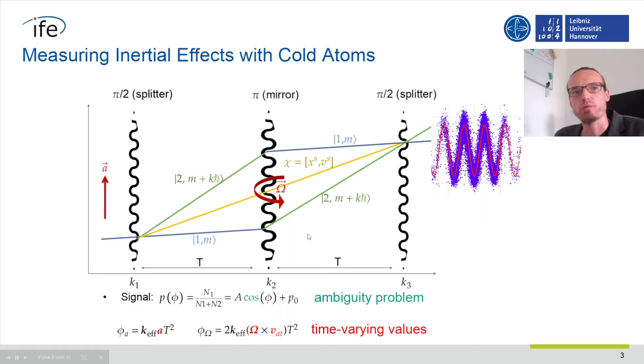Atom interferometry measures a phase shift between two atomic states with different momentum. This phase shift yields information about linear accelerations and angular rates.